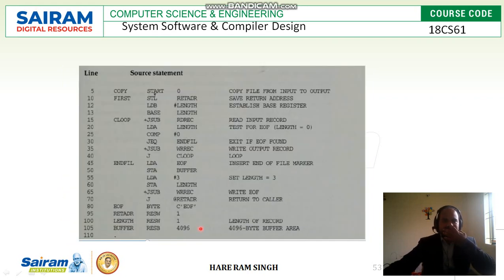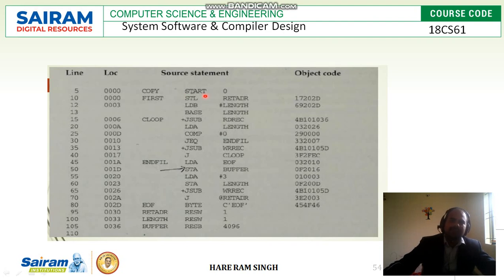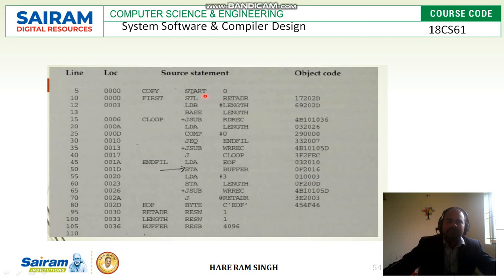Let us see this program. We are going to generate the object code for this using SIC/XE. As we know, object code cannot be generated directly. It will be done in two parts: Pass 1, where the location counter is generated; and Pass 2, where the object code is generated. The START assembler directive has no object code. Similarly, BASE is also an assembler directive with no object code.